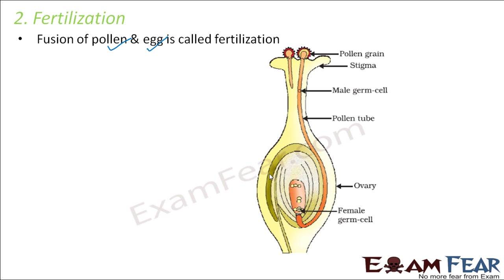Fertilization happens inside the ovary. As a result of pollination, the pollen grains are carried from the anther to the stigma. The pollen grains contain the male gametes, and they then form a pollen tube — a very thin tube formed by the pollen grain itself — which passes through the style.